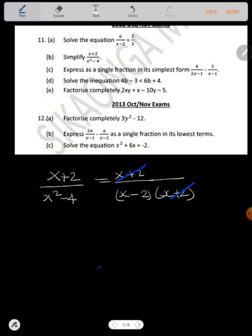You cancel this and this. What you remain with here, you remain with 1. 1 over what you remain with here is x minus 2. So that's the answer.